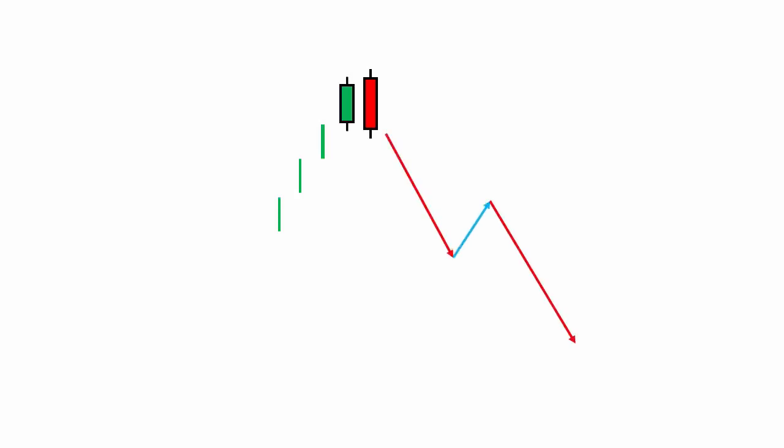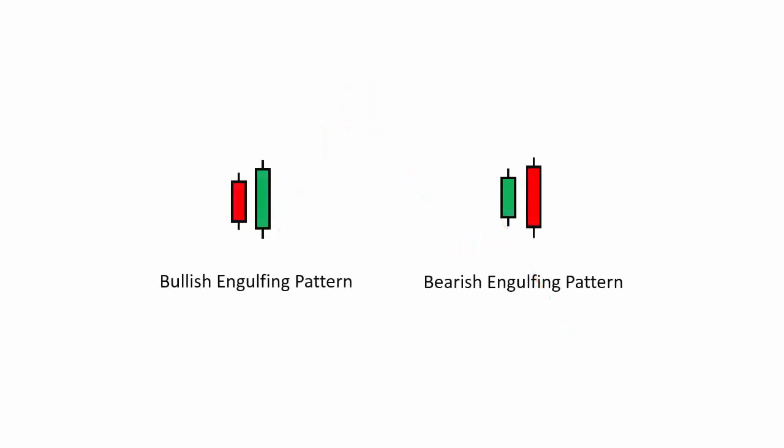In the same way, bearish engulfing candlestick pattern tends to form at the top of a price action chart, where a strong bearish candle engulfs or fully covers the previous bullish candle's range. After the bearish engulfing pattern forms, price usually falls in the direction of the bearish engulfing candle. That's why these candlestick patterns are so powerful — they give a very strong indication of the next market move and act as a trend reversal pattern.